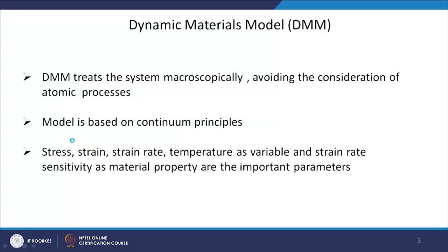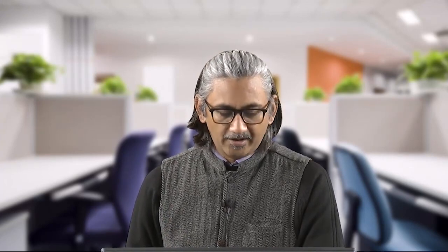This creates the argument for generation of a processing map. The Dynamic Materials Model proposes that it treats the system macroscopically. Earlier, in the deformation mechanism map, we were going into the actual atomic processes and from there trying to delineate different regions for different processes. But DMM treats this macroscopically, and atomic processes are not taken into consideration — the material is treated as a continuum.